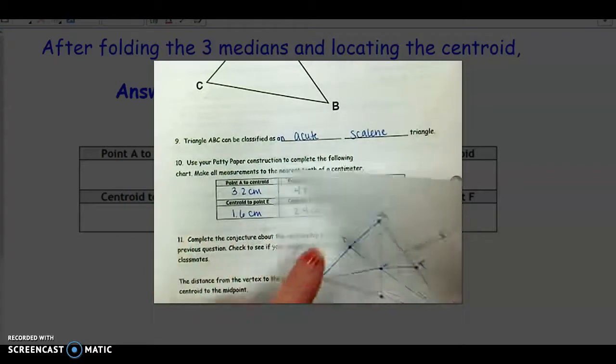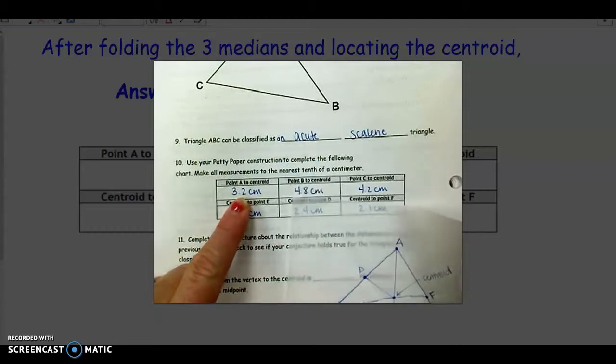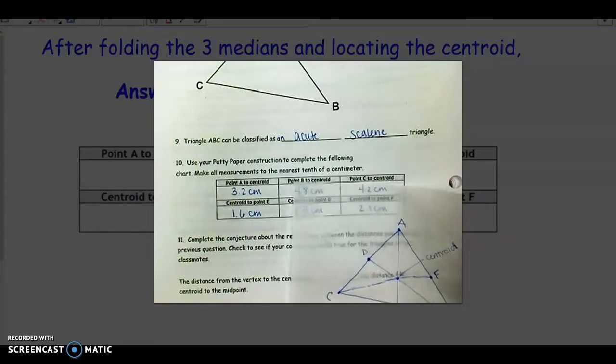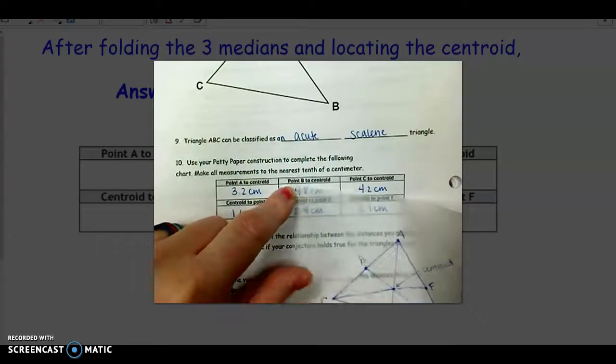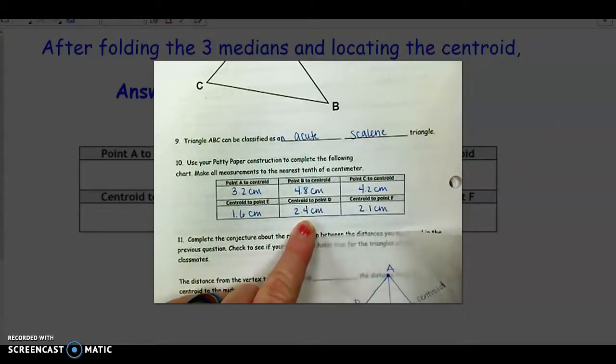So when I measured point A to the centroid, I got 3.2 centimeters or 32 millimeters. Centroid to point E was 1.6 centimeters. And then B to the centroid was 4.8 centimeters. The centroid to point D was 2.4 centimeters.